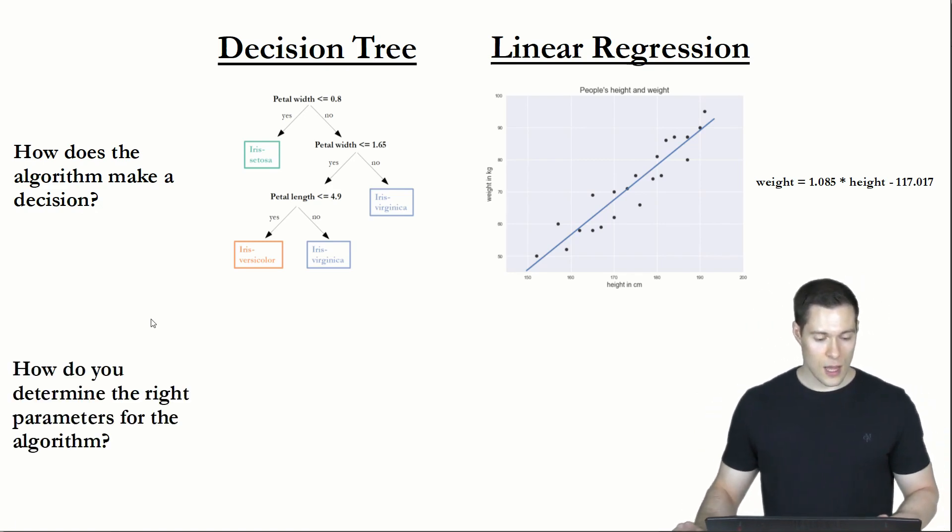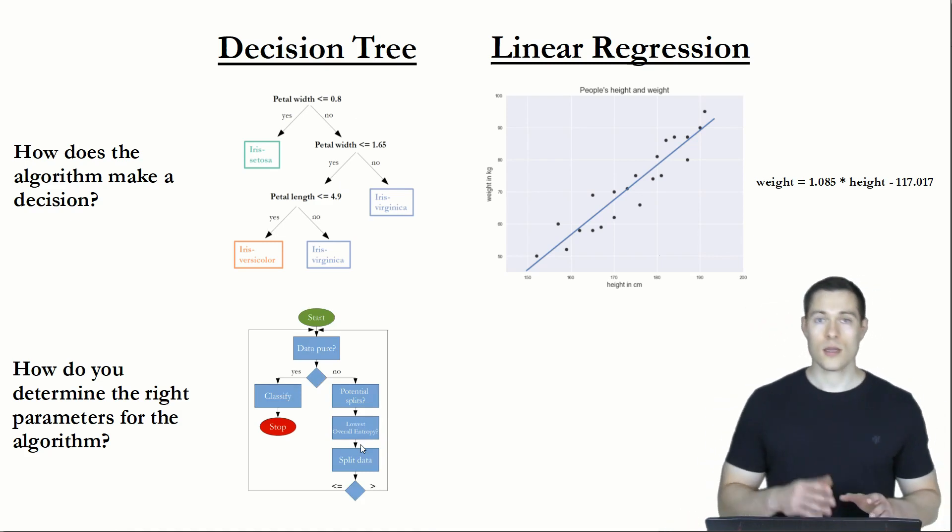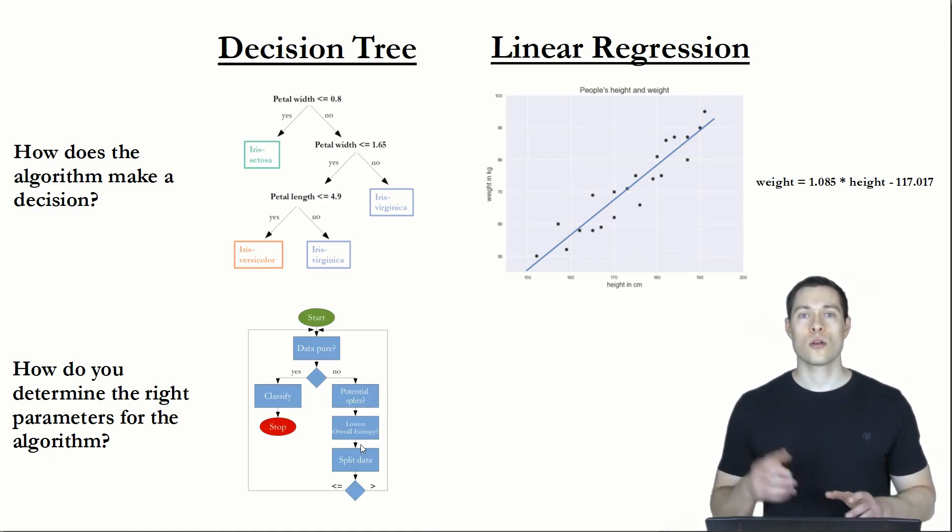The second one is then how do you determine the right parameters for the algorithm? And the parameters of the algorithm are the tuning knobs that we can change so that the algorithm is eventually able to make correct predictions. So for example, the parameters of the decision tree are the specific questions that we're going to ask. And the particular algorithm we use to determine those questions and thereby create this decision tree looked like this. And if you are interested in how that works in detail, you can watch my coding a decision tree from scratch video series.